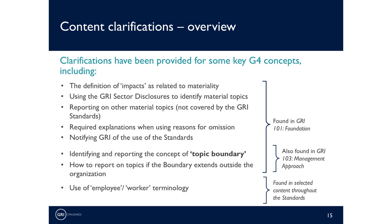This slide summarizes some of the main areas where content or concepts from G4 have been clarified. These include the definition of impacts as related to materiality, how to use the GRI sector disclosures — which are now recommended but not required — reporting on other material topics not covered by the standards, using reasons for omissions, and how to notify GRI of the use of the standards. In addition, GRI 103 Management Approach includes additional clarifications on the topic boundary and how to report the boundary if it extends outside the organization, for example when impacts occur in the supply chain. The terminology related to employee and worker has also been reviewed and in some cases revised, to improve consistency across the standards and better align with key international instruments.